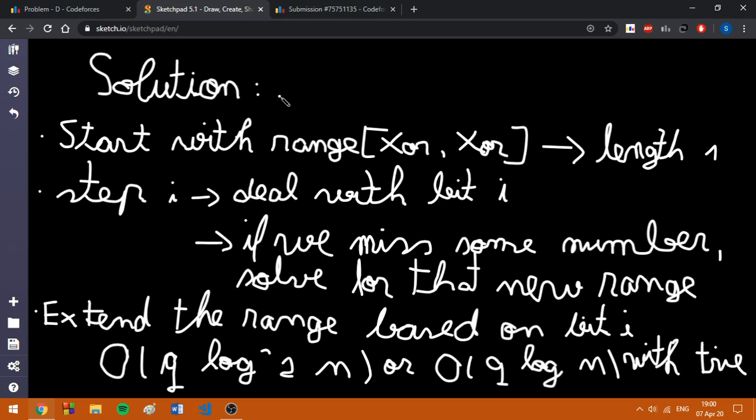So at some step, we are going to start with a range of length 1, and at some step we are going to deal with the bit on position i from the store number. If at some position we miss some number, this can be checked with prefix sums in constant time.